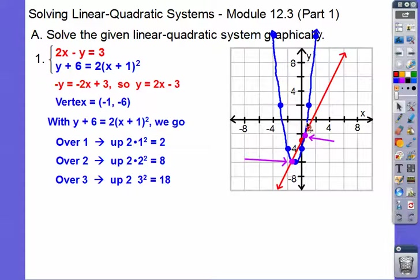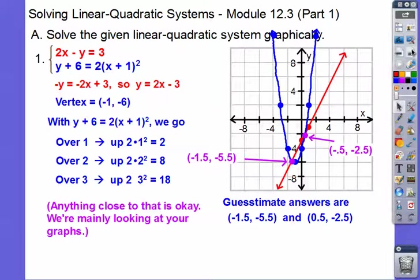And this will be, well, I don't know, 0.5 and then like negative 2.5. So just guessing on there. They're just guesstimate answers. So anything that's close enough, we'll give you credit on that. And those aren't the exact answers. We'll find those out the algebra way in the next lesson. Let's try another one.